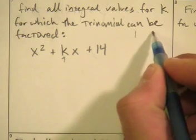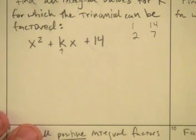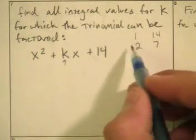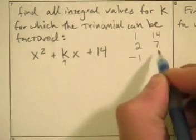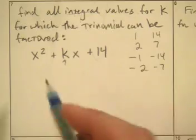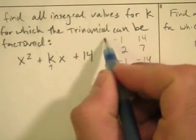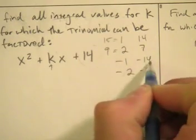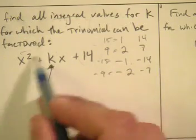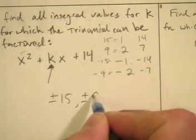Let's see — 14 is 1 times 14, 2 times 7. 3 doesn't work, 4 doesn't go in, 5, 6 — no. So those are the factor pairs. But also their opposites, because a negative times a negative also equals a positive: negative 1 and negative 14, negative 2 and negative 7. The sums are: 1+14=15, 2+7=9, and the negatives give negative 15 and negative 9. So the only possible values for k are plus or minus 15 and plus or minus 9.